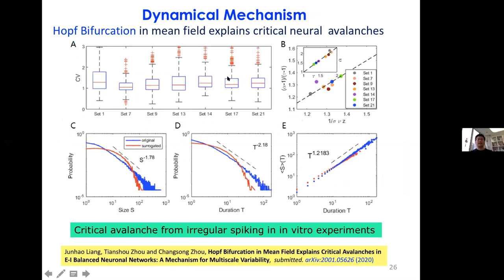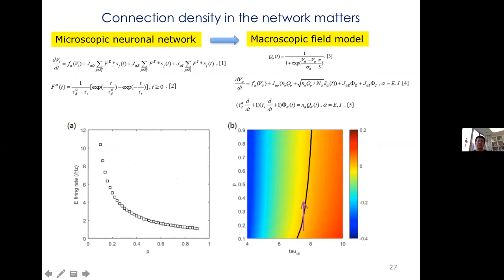Comparing the field model with the spiking network confirms that at the transition point the spike distribution follows a power law — the neuronal life avalanche at the microscopic scale. We validate this against data from monkey neuron cultures, where the CV of irregular spiking is close to one but you can observe spike avalanches. From the mean-field analysis, we also find that local connectivity density matters — in the parameter space of synaptic decay time versus connectivity, higher density moves the system toward oscillatory dynamics.